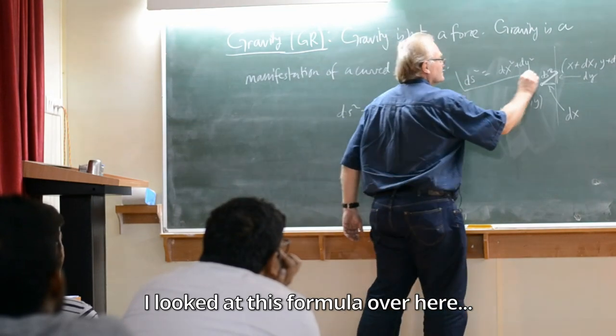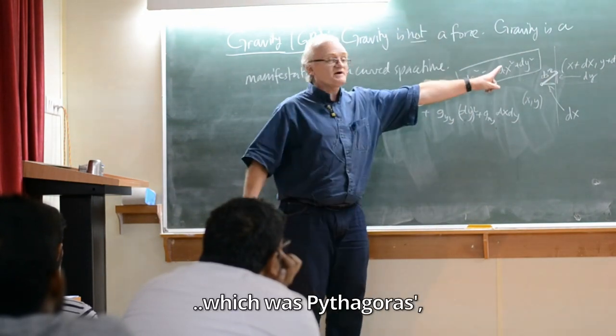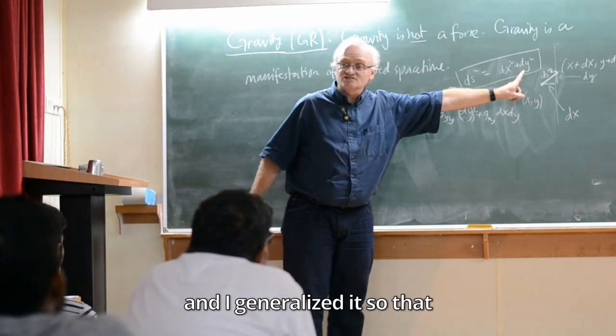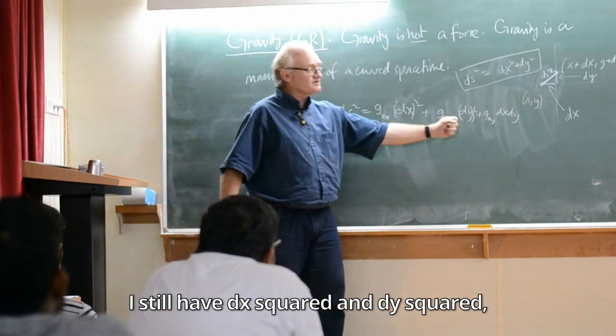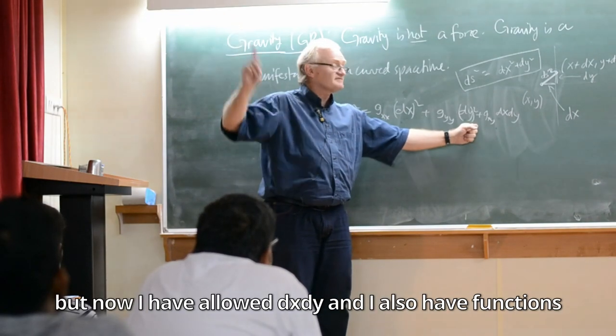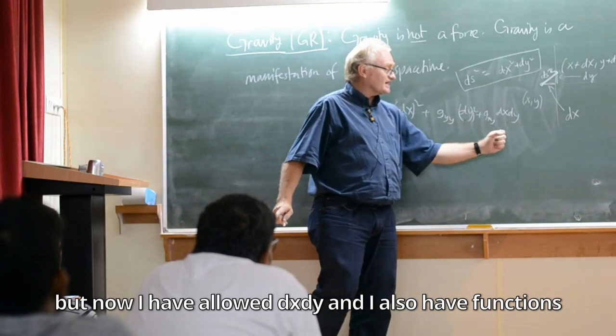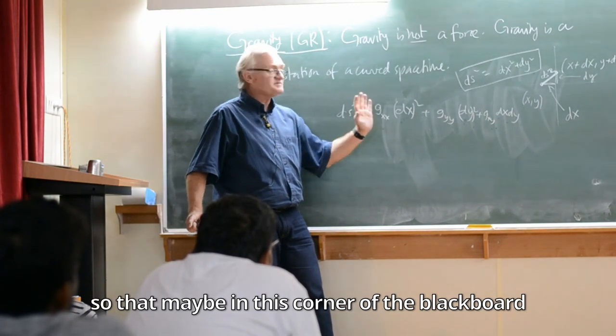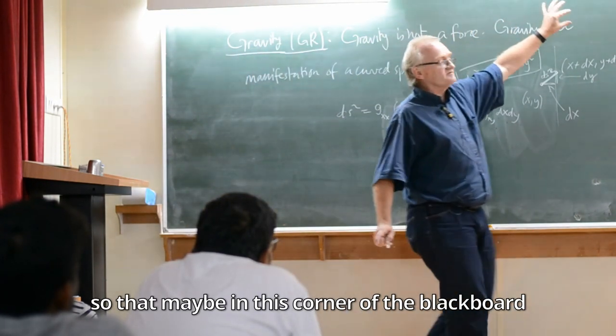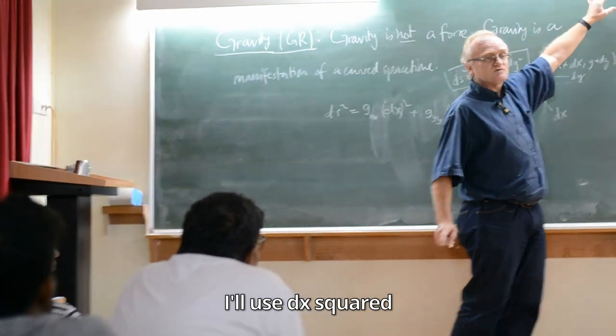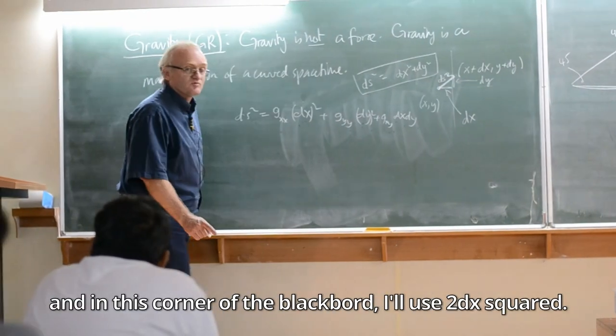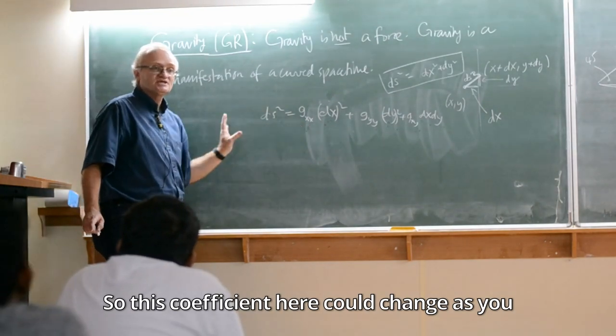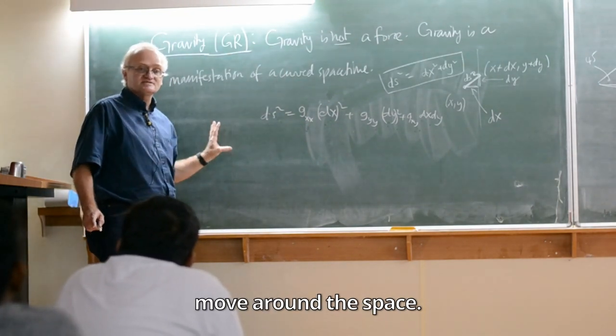And I said, let me generalize it. I'll generalize it so that I still have dx², dy² and dy squared, but now I've allowed dx dy and I've also allowed functions sitting in front of these terms. So that maybe in this corner of the blackboard I'll use dx² and in this corner of the blackboard I'll use 2 dx². Okay, so this coefficient here could change as you move around the space.